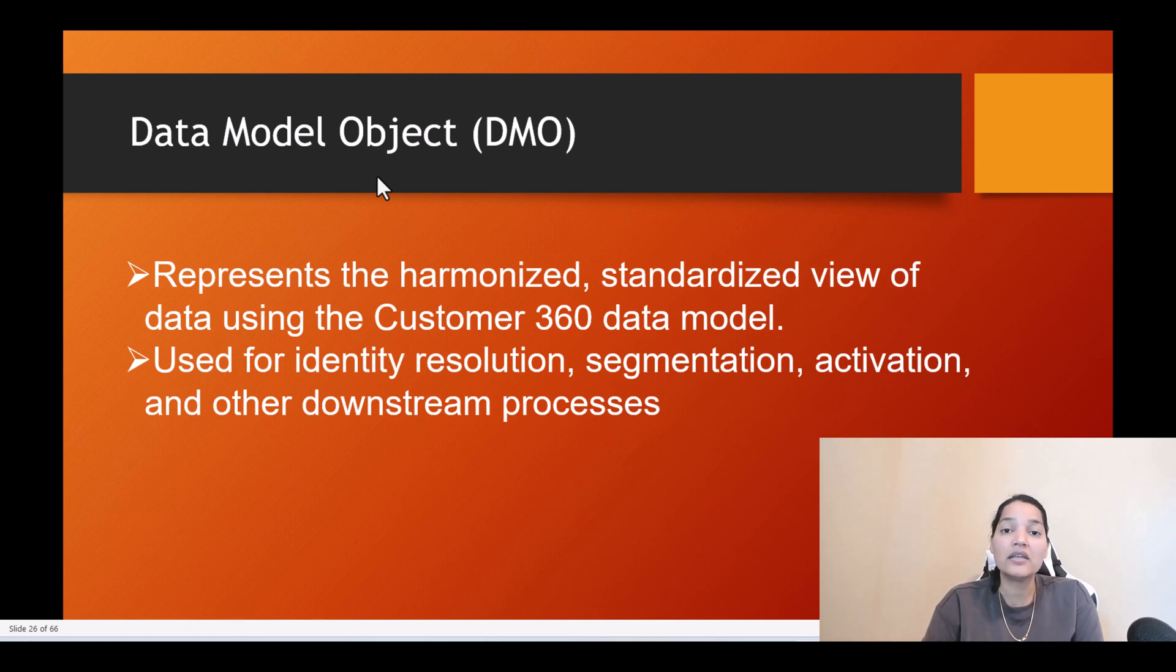So there are three main categories or three main objects in data cloud: data source object, data lake object, and data model object. Data source object and data lake object is basically raw unprocessed data. In the case of DLO, it can be slightly different if you have introduced new formula fields. But the data inside of DLO is not harmonized data. Then what happens is these DLOs get mapped to the 360 data model of data cloud and they become harmonized and standardized. Any segmentation you do or any identity resolution, all of that happens on the DMO records.